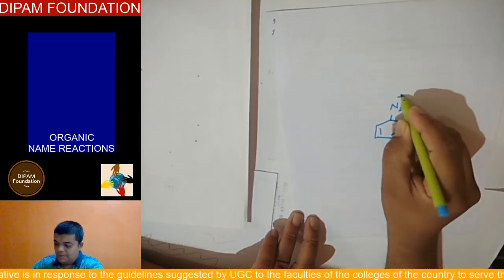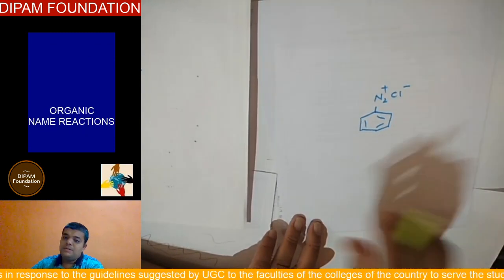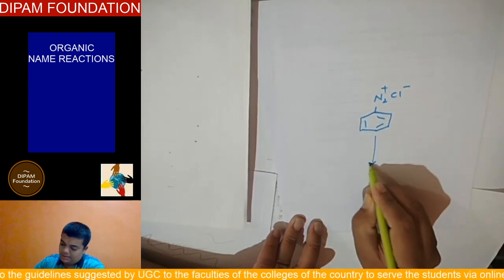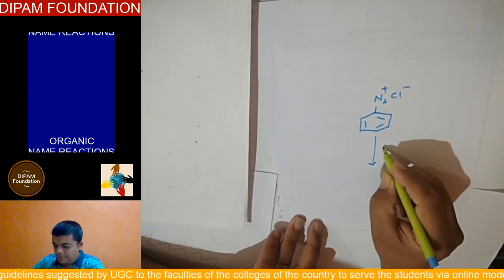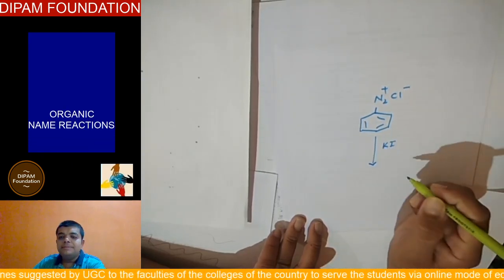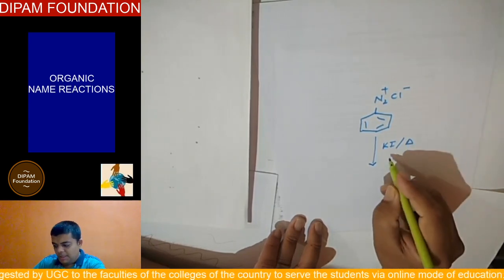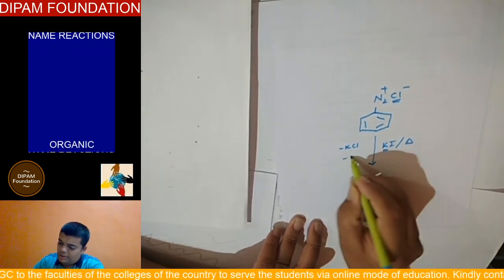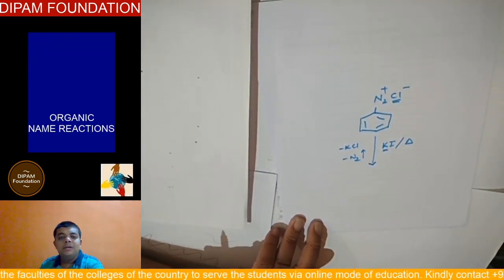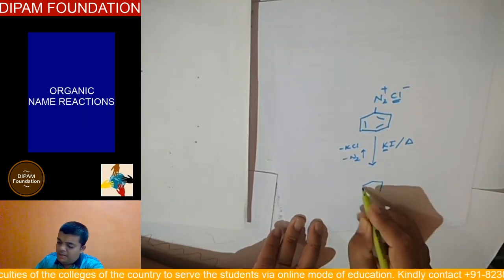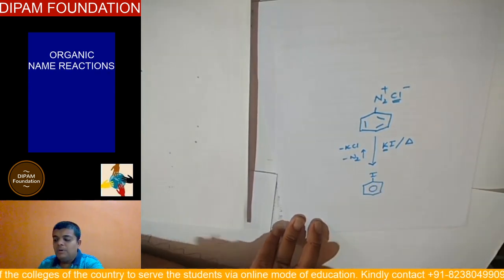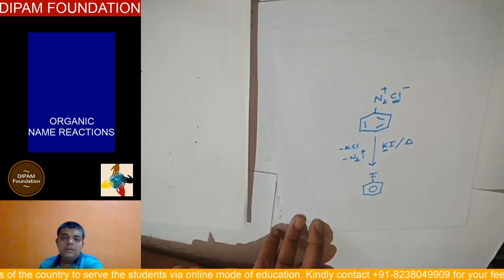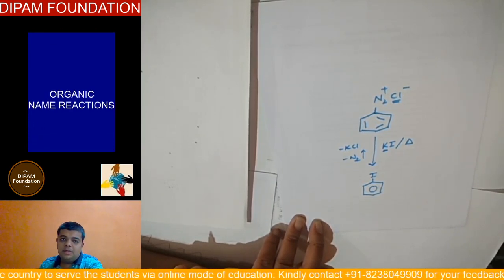This is benzene diazonium chloride salt. In the very first step itself will be reacting it with AI and heat. The ACL will be removed along with the evolution of N2 gas resulting in the formation of iodobenzene. This is the first fundamental product that we get and it is iodobenzene.